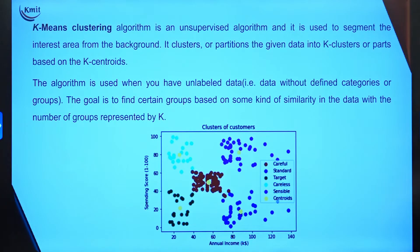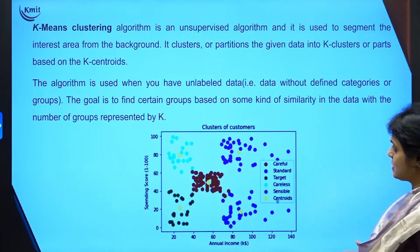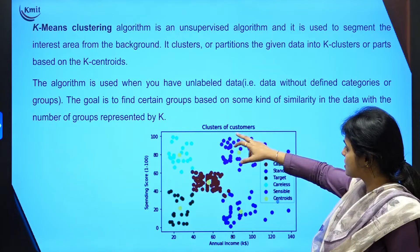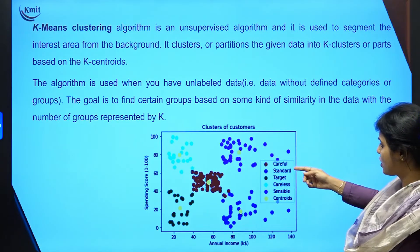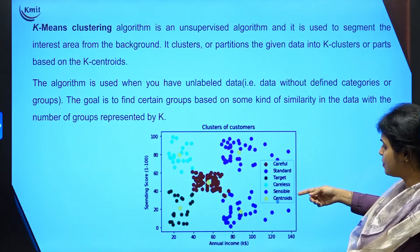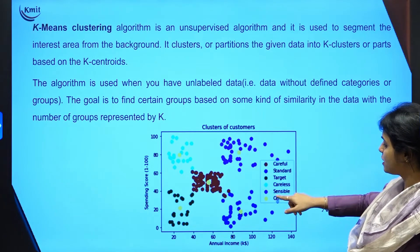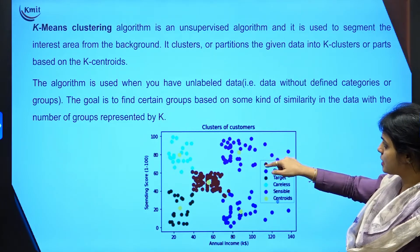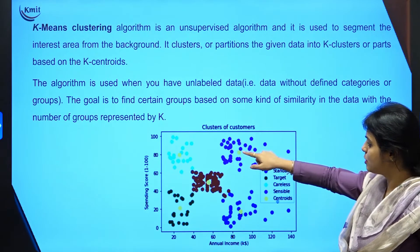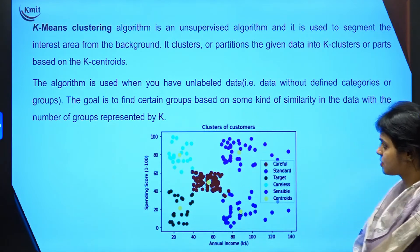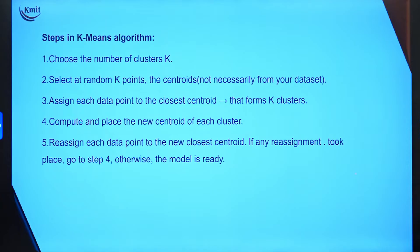This algorithm is used when you have unlabeled data — data without any defined categories or names or groups. The main aim of the k-means clustering algorithm is to find groups. For example, clusters of customers — careful customers, standard, target, careless, sensible — divided into groups with centroids, finding the nearest k number of values and grouping them into different clusters.